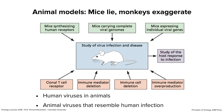An animal model may approximate human disease, but you can't assume that it does. This is why pharmaceutical companies test new drugs extensively in animal models selected to be as close as possible to what happens in people.